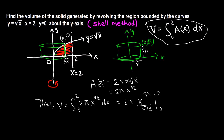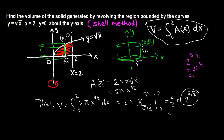Plugging in the upper limit x equals 2 and lower limit x equals 0 — the lower limit contributes 0. Bringing the 5/2 to the front as 2/5: we get 2π times (2/5) equals (4/5)π, times 2^(5/2). Now 2^(5/2) equals 2^5 times 2^(1/2) equals 32 times root 2, and root 32 equals 4 root 2, so 2^(5/2) equals 4 root 2. Therefore the final answer is (16π√2)/5 cubic units.